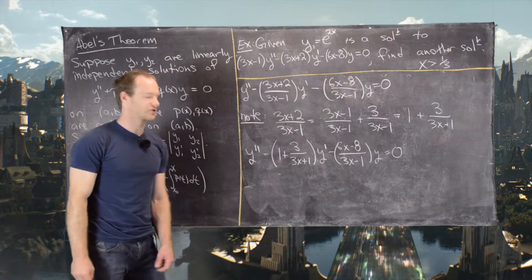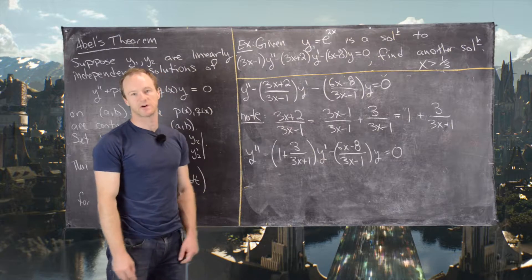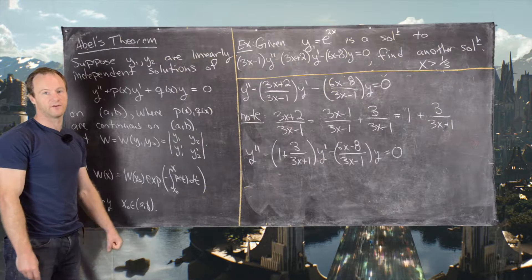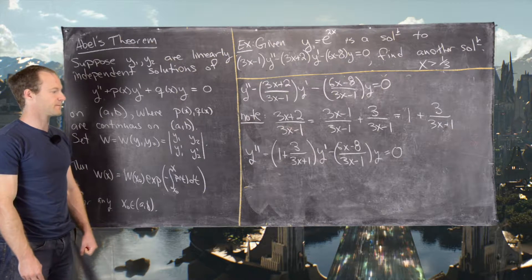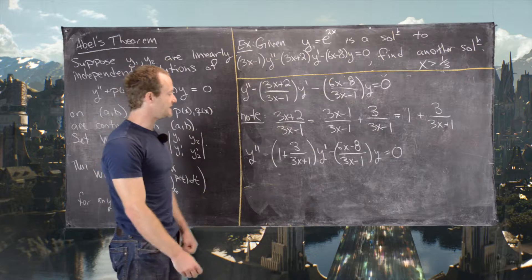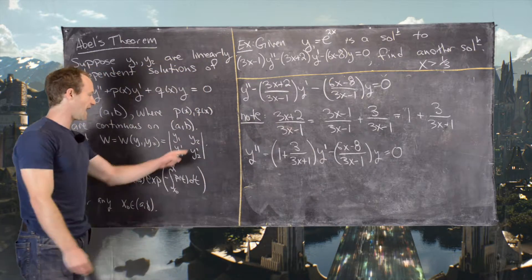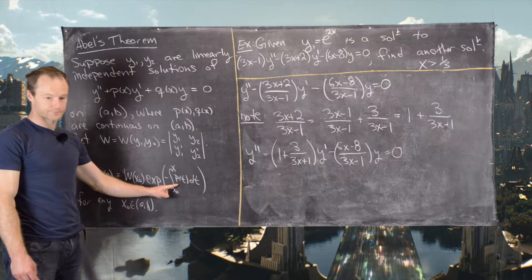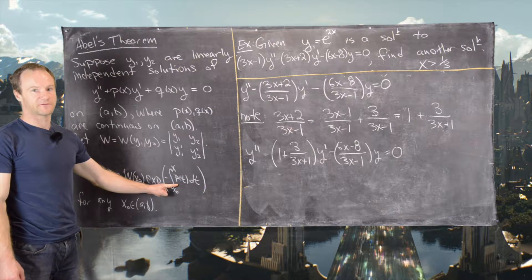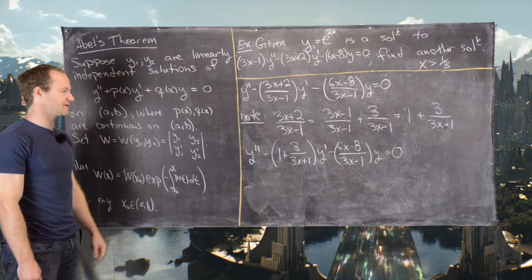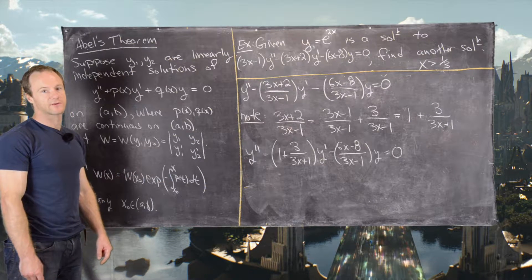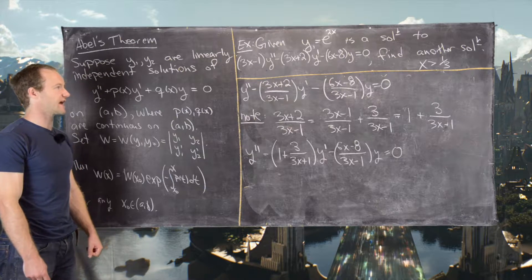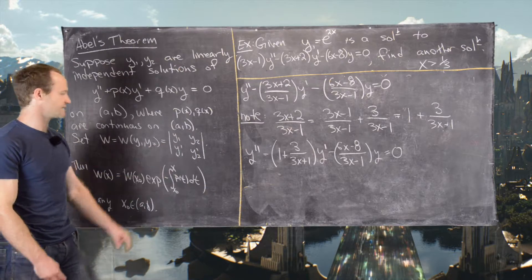The reason we went through the trouble of simplifying p but not q is that at some point we'll need to take the antiderivative of p, and this form will make that easier. The idea is to set the definition of the Wronskian equal to the result from Abel's theorem, giving us a first-order linear ODE we can solve for the second solution.